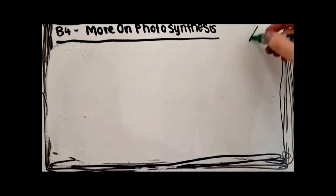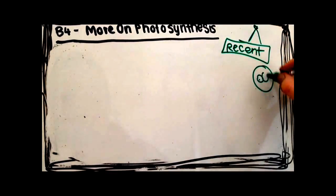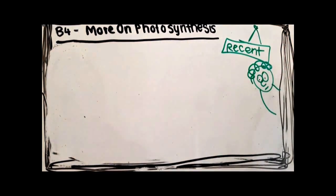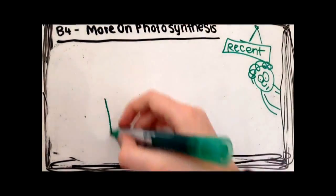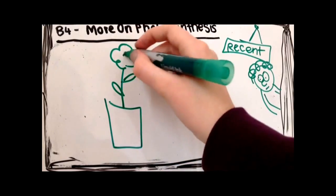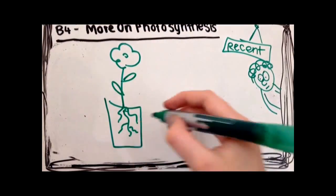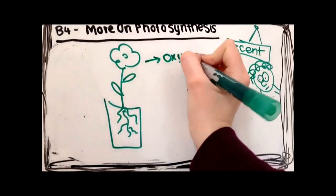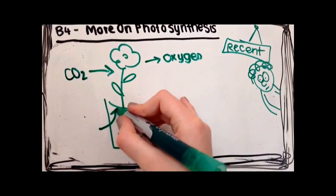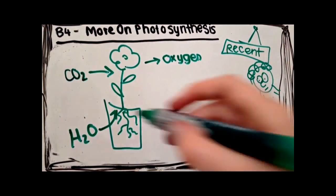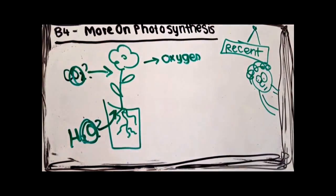Now, more on photosynthesis. In more recent years, scientists have realised that plants release oxygen during photosynthesis, which is something Priestley didn't realise. However, they didn't know whether the oxygen came from carbon dioxide or water as both of these contain oxygen atoms.